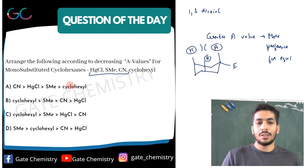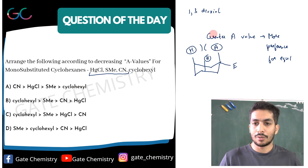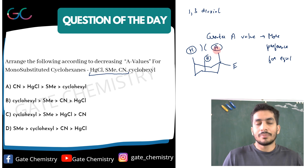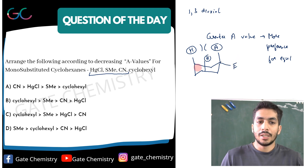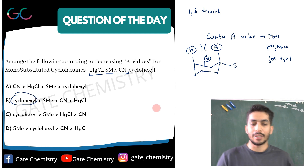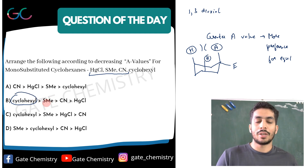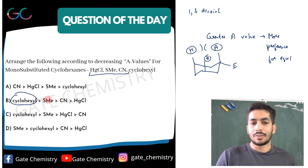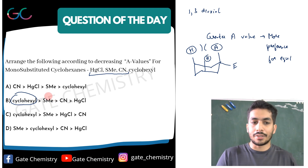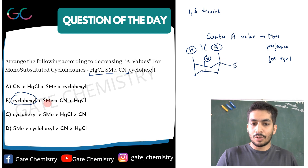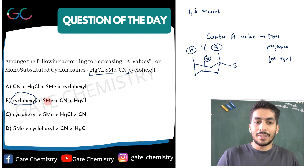Looking at the cyclohexyl group — it is very bulky, so the equatorial position is much more favored, giving it the highest A-value. Then there's SMe: methyl has a carbon with three hydrogens attached, making it also bulky and preferring equatorial. So SMe will also have a high A-value, though slightly lower than cyclohexyl since cyclohexyl is even bulkier.